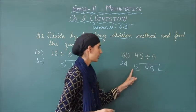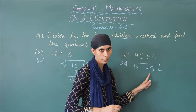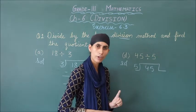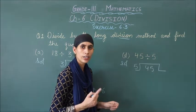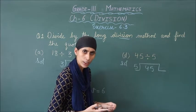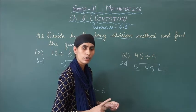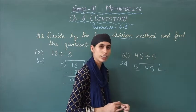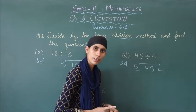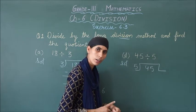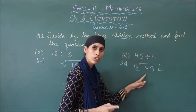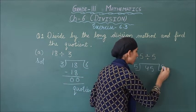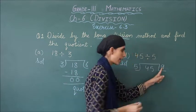To hume check karna hai 5 ki table mein 45 kahan par aata hai. So: 5 ones are 5, 5 twos are 10, 5 threes are 15, 5 fours are 20, 5 fives are 25, 5 sixes are 30, 5 sevens are 35, 5 eights are 40, 5 nines are 45. So 9 yahan write down hoga.